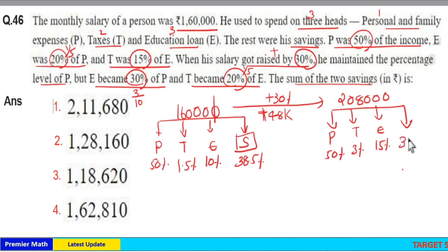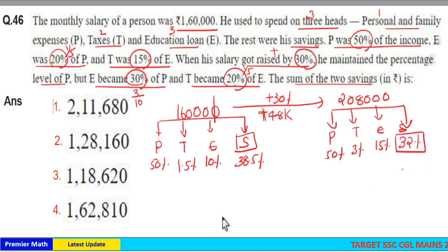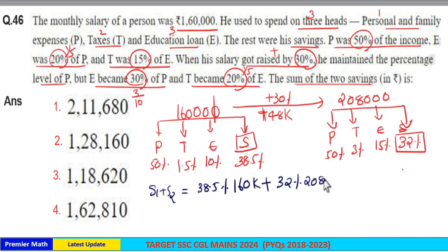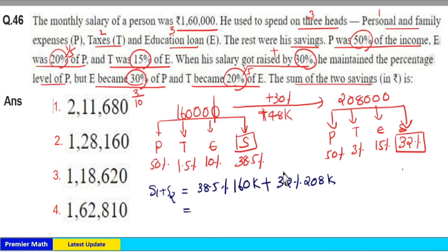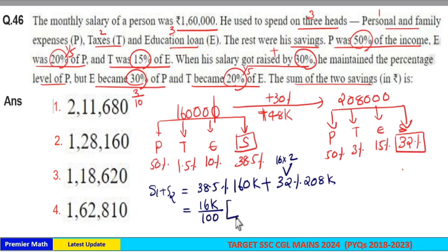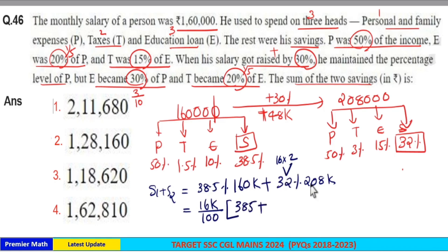Now the remaining is savings: 50 plus 15 plus 3 is 68. So 100 minus 68 is 32% savings on the new salary. Total savings S1 + S2 = 38.5% of 1,60,000 plus 32% of 2,08,000. This equals 38.5 × 1600 + 32 × 2080, simplified by taking 16 outside: 16/100 × (38.5 × 10 + 2 × 208) = 16/100 × (385 + 416).